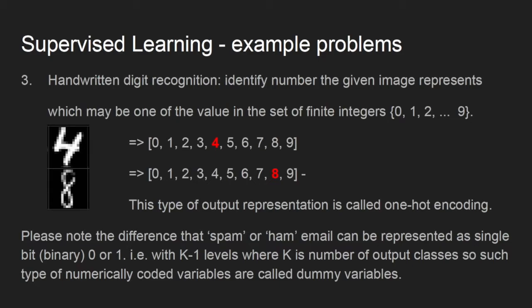And one more example, let's say we want to predict the handwritten digit given an image. Here input is an array of pixel values of handwritten digit, and response variable is one of the values from a set of ten values, zero to nine.